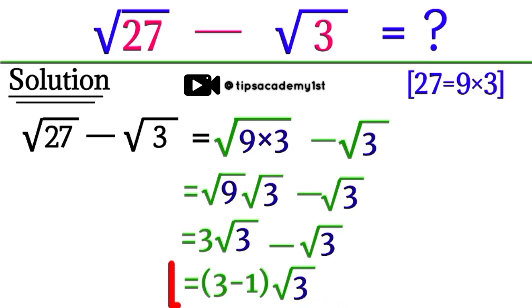And here, 3 minus 1 will be equal to 2, so the answer will be 2 square root 3.